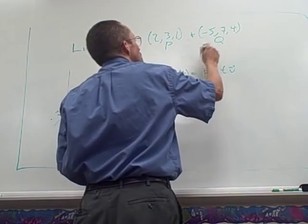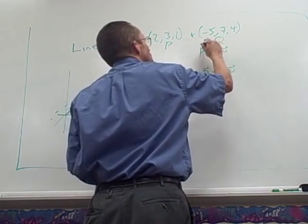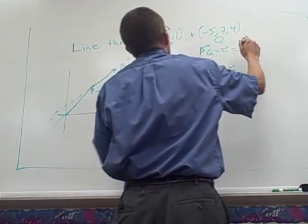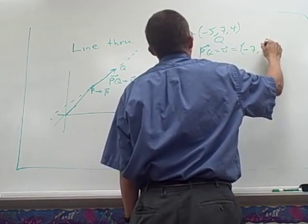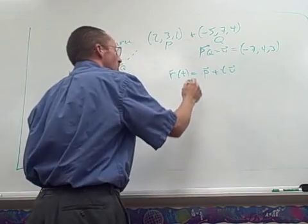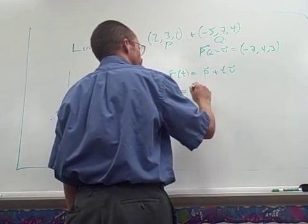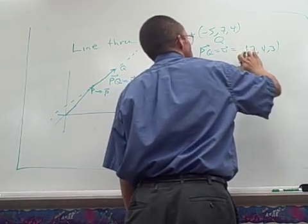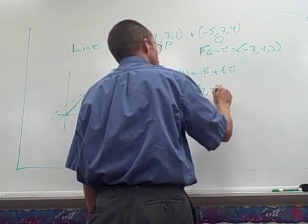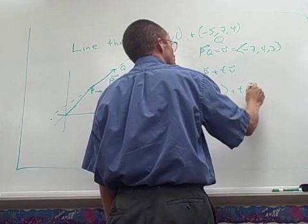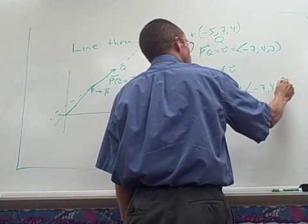Okay, so PQ here, which is going to be our V vector, is just Q minus P, and so that's -7, 4, 3. And so this is going to be the vector, oh, I guess let's use angle brackets to go with the book's notation. So this is just going to be <2, 3, 1> plus T times <-7, 4, 3>.